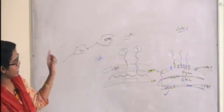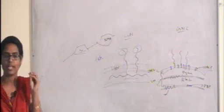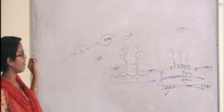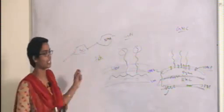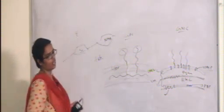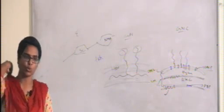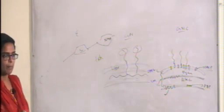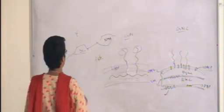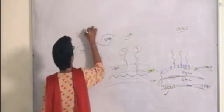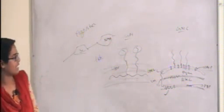For acid-fast bacteria, there is a special component — mycolic acid. For Chlamydia and Mycoplasma, a special component known as ergosterol is present. Usually in bacterial cell walls or cell membranes we don't have sterols, except in Chlamydia and Mycoplasma where ergosterol is found.